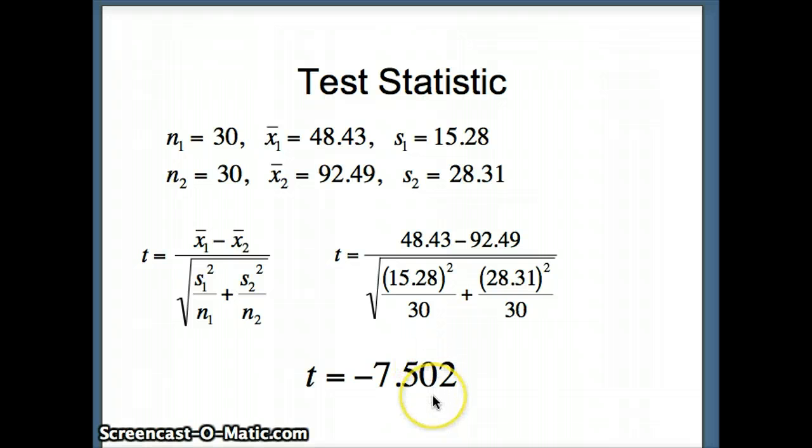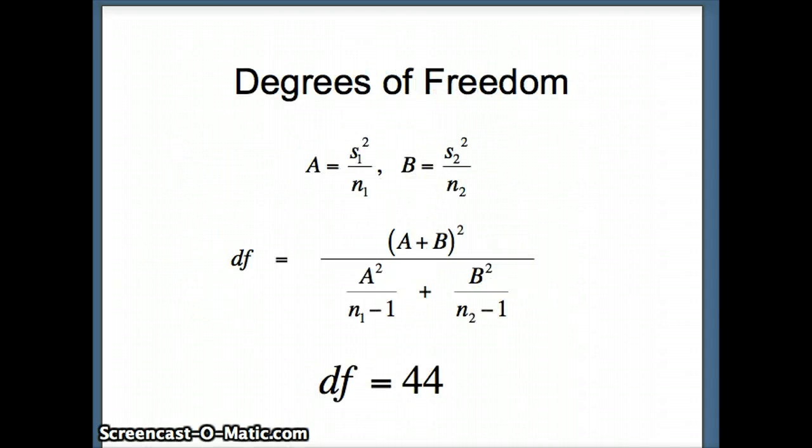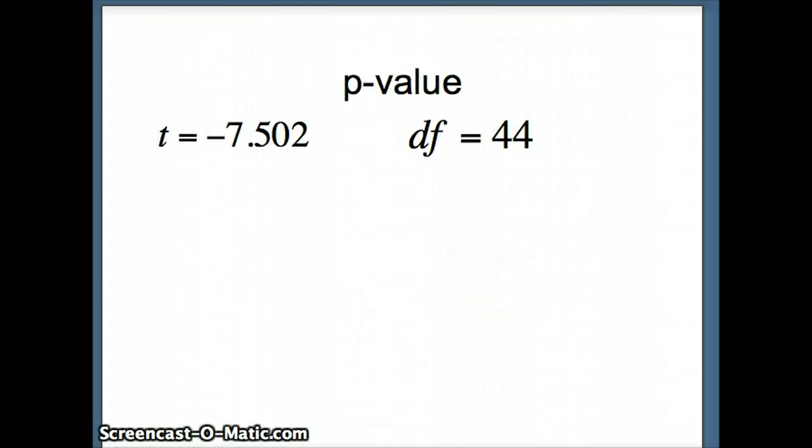Remember, a t with a large number of degrees of freedom is fairly close to a z. With our z distribution, we had 99.7% of the data within three standard deviations of the mean, so that's telling me right now that this negative 7.502 is a fairly extreme t value. Our degrees of freedom here are 44, so a t with 44 is fairly close to a z, so again more evidence that we have an extreme value for t.